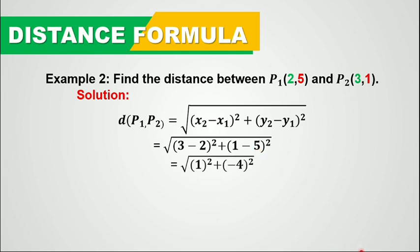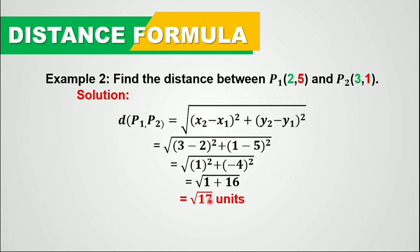x sub 2 minus x sub 1 gives us 3 minus 2, which is 1 squared. y sub 2 minus y sub 1 gives us 1 minus 5, which is negative 4 squared. So 1 squared is 1, plus negative 4 squared is 16. 1 plus 16 equals 17, so the answer is the square root of 17 units. This is the distance between these two given points.